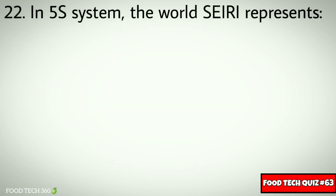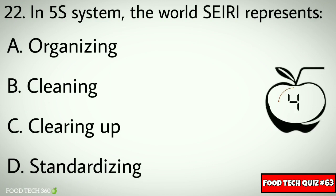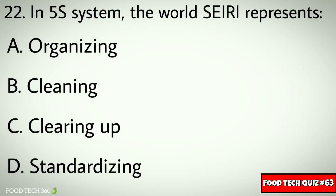Question No. 22. In the 5S system, the word SEISO represents: Options: A. Organizing, B. Cleaning, C. Clearing up, D. Standardizing. Correct answer: C. Clearing up.